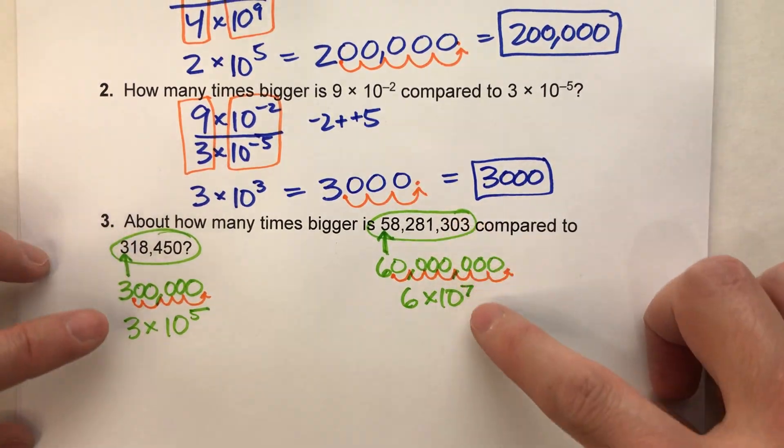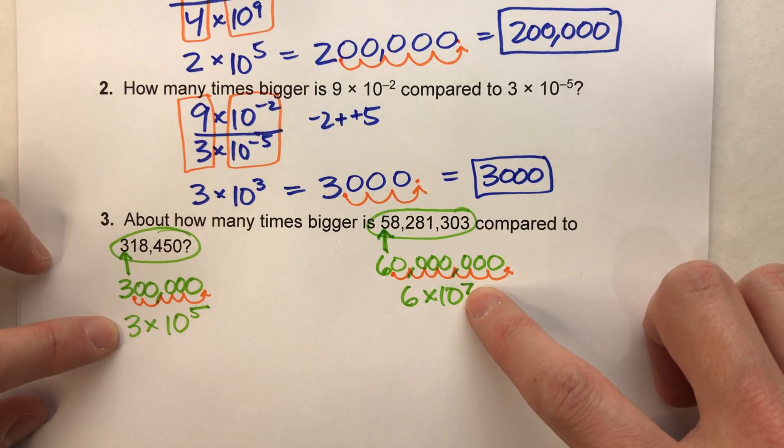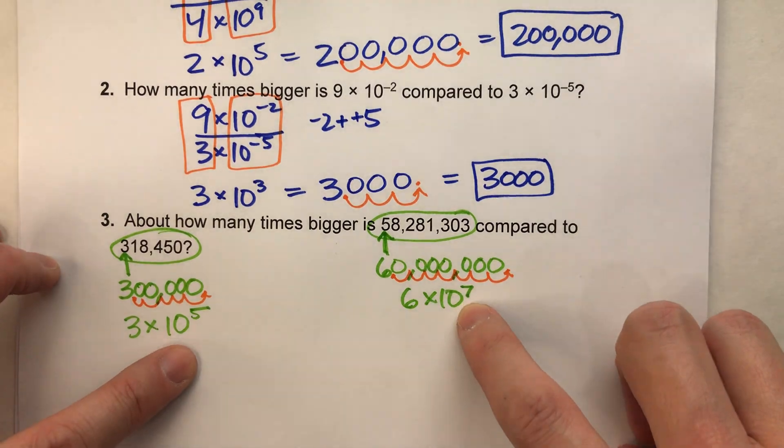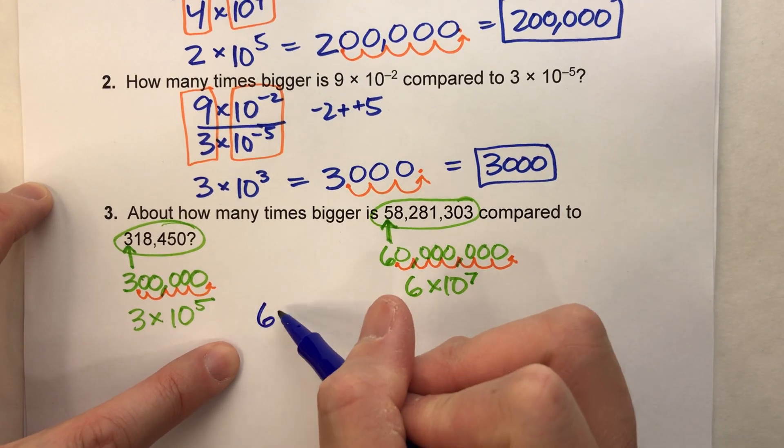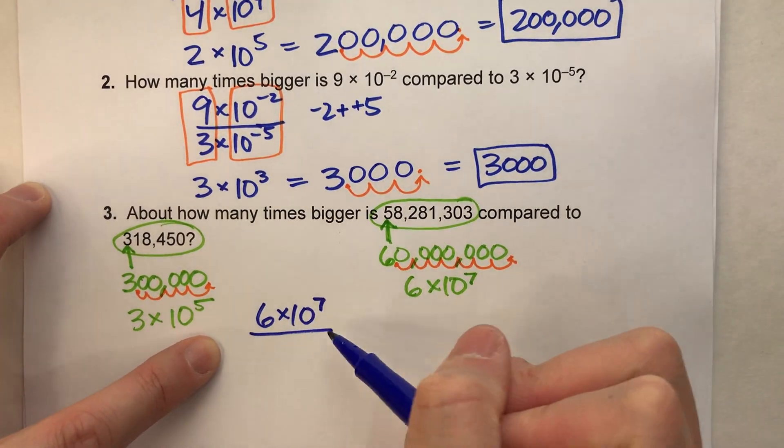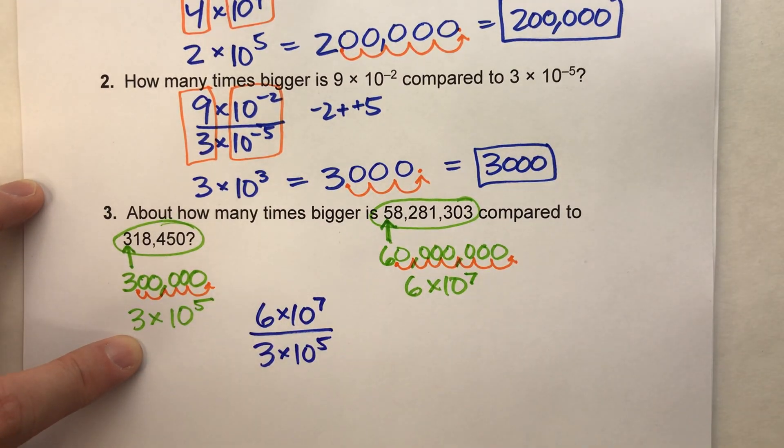But now that I have my two numbers in an estimated approximation and in that single digit times the power of 10 format, now we could just do the division like we did before. Six times 10 to the seventh power divided by three times 10 to the fifth power.